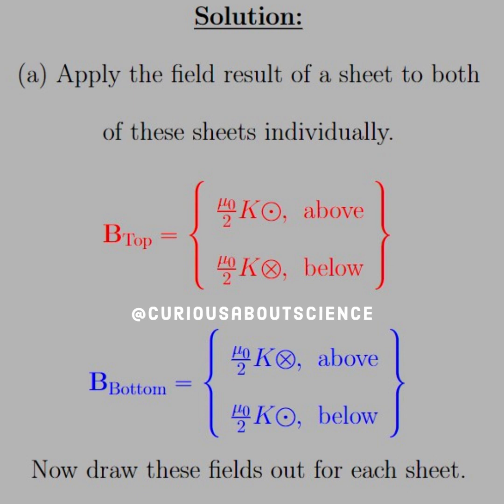Alright, so first we need to modify the solution that we found for just a single plate and add it to this scenario. In the red, we see that the magnetic field of the top plate is mu naught over 2K going or pointing out of the page when we're on top of that plate,